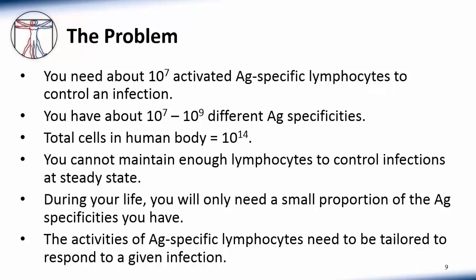This takes us to a general problem faced by the immune system. You need about 10 to the 7th activated antigen-specific lymphocytes to control an infection. You have about 10 to the 7th to 10 to the 9th different antigen specificities. However, the total cells in the human body is only about 10 to the 14th. Thus, you cannot maintain enough lymphocytes to control infections at the steady state.